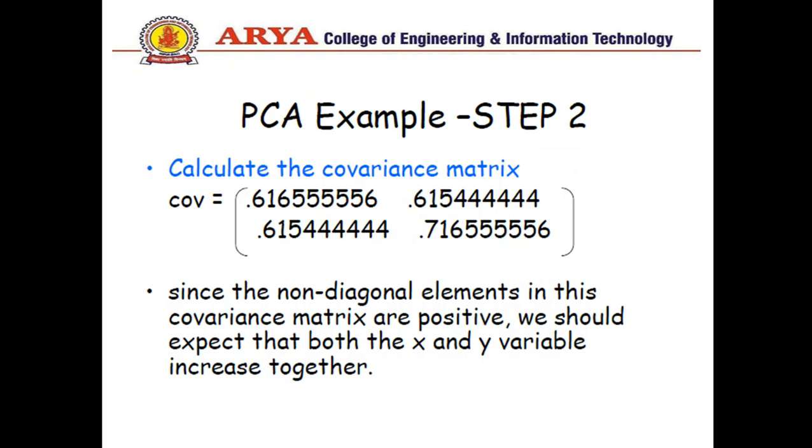When we calculate covariance matrix, we get the values: for x,x that is 0.6165, for x,y it will be 0.615, for y,x will be 0.615, and for y,y, 0.7165. Non-diagonal elements in this covariance matrix are positive, so we should expect that both the x and y variables increase together.